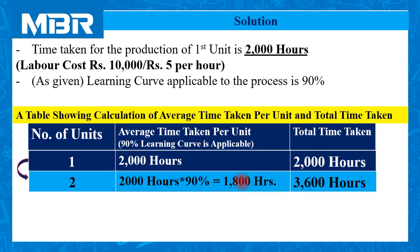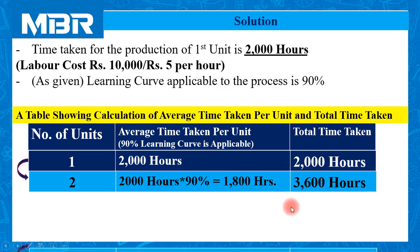Now we need to double the production from one unit to two units. 2,000 hours average time multiplied by 90% learning curve gives 1,800 hours per unit. So the total time required for the manufacturing of two units will be 3,600 hours.